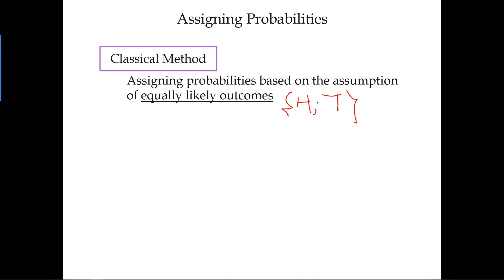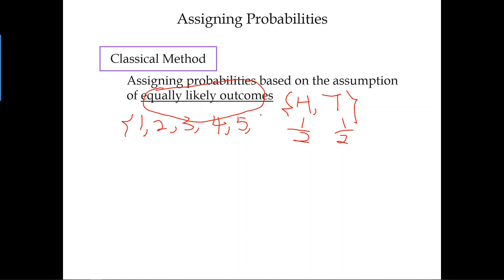Using the classical method, we assume heads and tails are equally likely to happen — they have exactly the same chance. So heads is one out of two outcomes, and tails is also one out of two outcomes. Similarly, if you toss a fair die once, you have six possible outcomes: one, two, three, four, five, and six. The chance of getting any one number is one over six, since each outcome is equally likely.